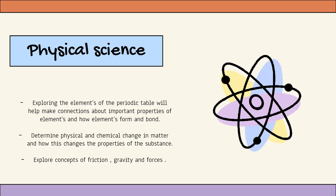Starting off with physical science, it is about exploring the elements of the periodic table that will help us make connections about the important properties of elements and how elements form and bond. We will be discussing the development of the atomic theory and the different models of the atom, such as Thomson's model, Bohr's model, and cloud model, until we reach the modern model of the atom.